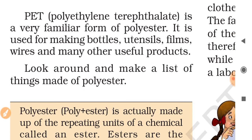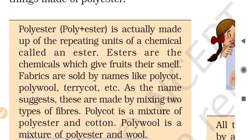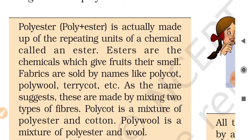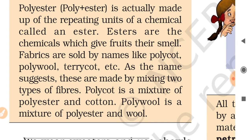Look around and make a list of things made of polyester. Poly plus ester is actually made up of repeating units of a chemical called an ester. Esters are the chemicals which give fruits their smell. Fabrics are sold by names like polycoat, polywool, terrycoat, etc. As the name suggests, these are made by mixing two types of fiber. Polycoat is a mixture of polyester and cotton. Polywool is a mixture of polyester and wool.